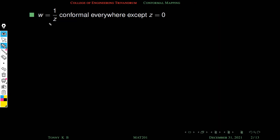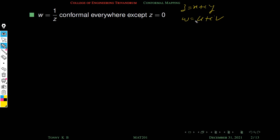Here z and w are both complex numbers. We take z = x + iy and w = u + iv. We plot z in the z-plane and the images w in the w-plane. The question is: what is the relation between u, v, x, and y?